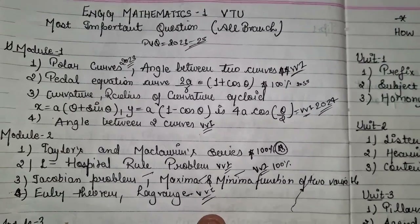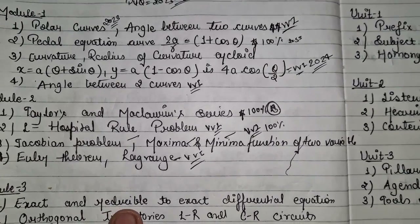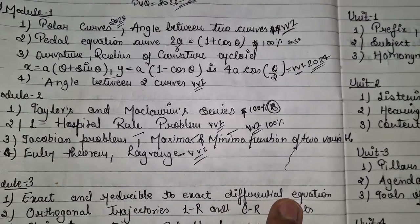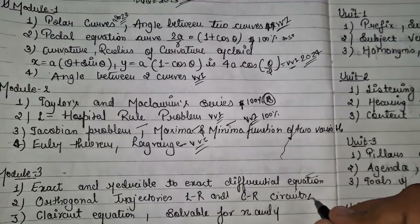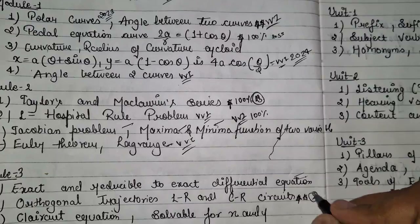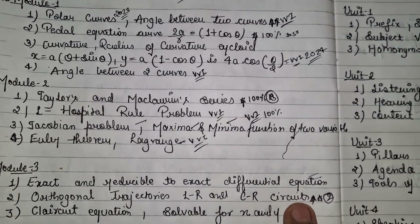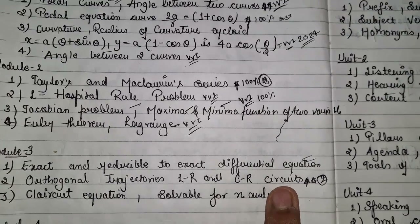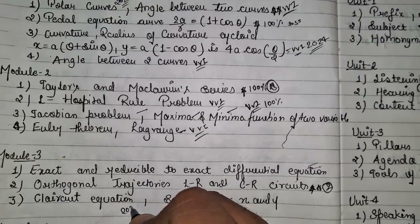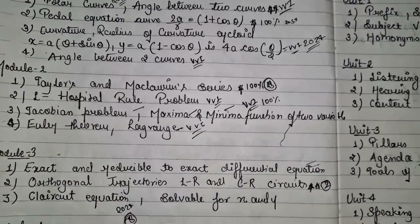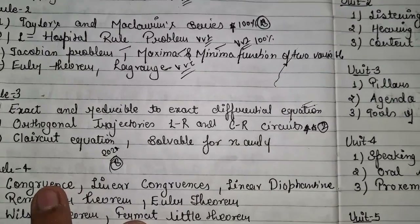Module 3: Question one is exact and reducible-to-exact differential equations — most important. Orthogonal trajectories and L-R and C-R circuits are also key, with two 6-mark questions totaling 12 marks. The Clairaut equation is extremely important — in 2024 it was asked for 8 marks, solvable for x and y. These are the most important topics in Module 3.